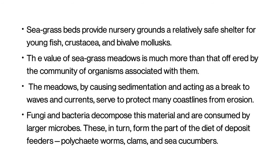The seagrass beds provide nursery grounds — a relatively safe shelter for young fish, crustaceans and bivalves. The value of seagrass meadows is much more than that offered by the community of organisms associated with them. The meadows, by causing sedimentation and acting as a break to waves and currents, serve to protect coastlines from erosion. Fungi and bacteria decompose this material and are consumed by larger microbes, which in turn form part of the diet of deposit feeders such as polychaete worms, clams and sea cucumbers.